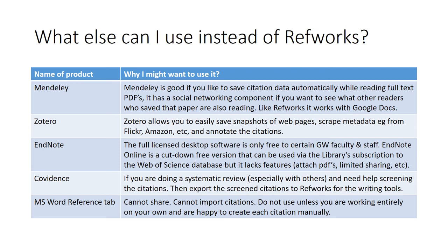By contrast, Zotero allows you to save snapshots of web page data — so if you're looking at an image on Flickr, you can very easily save all the information about that image using Zotero and annotate the citations.